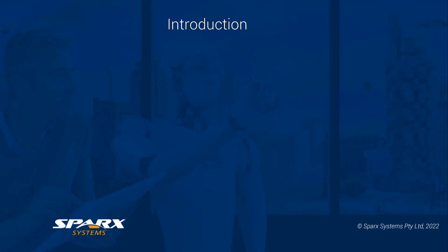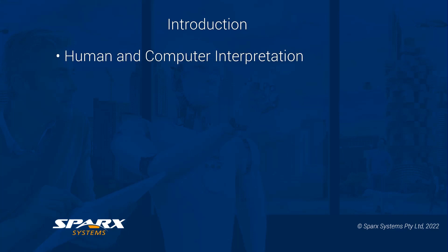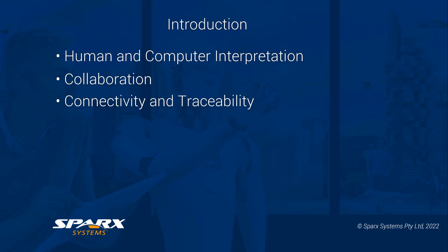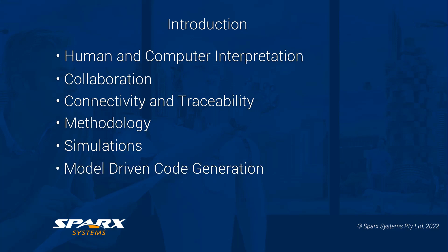In part 3 of this series we will now run over the human as well as the computer interpretation of these models, which includes interpreting the model on a precise human level, the features available for team collaboration within the modelling environment, connectivity of parts in the model and the ability to trace the source or outcome of these, then a brief look at applying methodology and the design process. Then we go on to looking at the computer extrapolation of the core model for purposes such as simulation and code generation, and finally looking at the features used for verification and validation of the model and code.